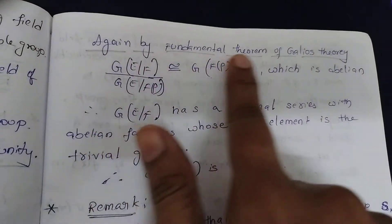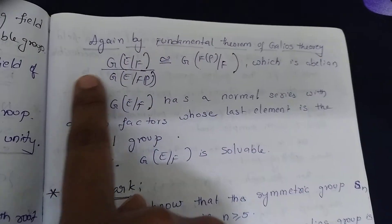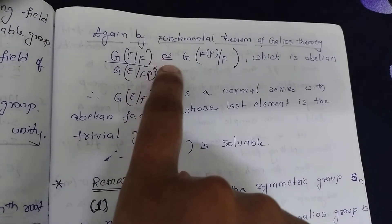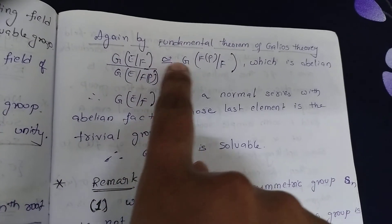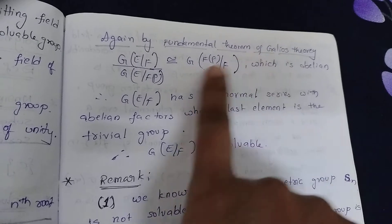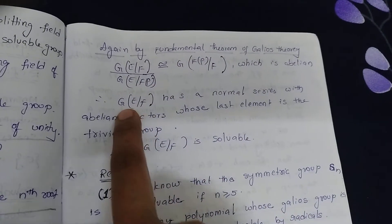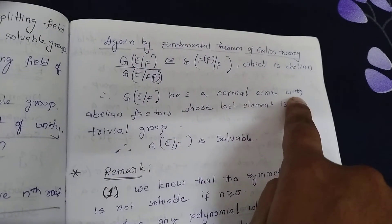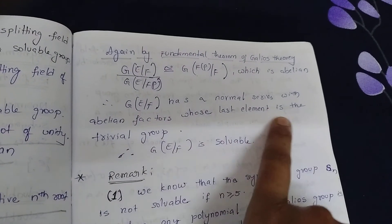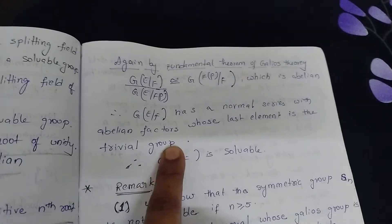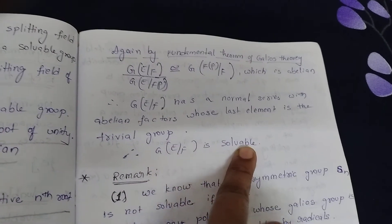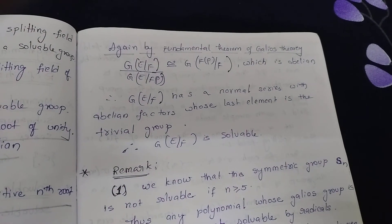Again by the fundamental theorem of Galois theory, G(E/F) / G(E/F(ρ)) is isomorphic to G(F(ρ)/F), which is abelian. Therefore G(E/F) has a normal series with abelian factors whose last element is the trivial group {e}. So G(E/F) is a solvable group. That is the proof.